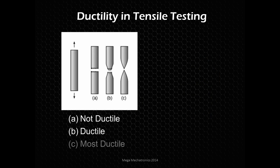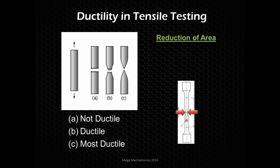A better way to gauge ductility with our tensile test is to measure the necking. In example A it's quite brittle — no necking, no change. B is what we expect from a ductile fracture, and C is the ideal ductility example, the most ductile. To calculate that, we find the reduction of area — the percent change in area. We take the change in area, divide by the initial area to get the percentage reduction of area.